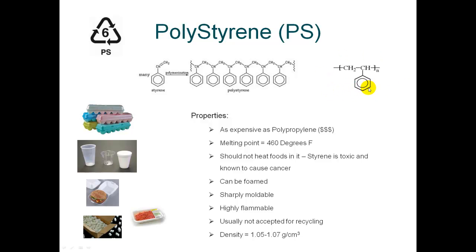This is the styrene monomer for polystyrene. The difference between this and polypropylene is that instead of having another carbon, what we've got is a ring of carbons. This ring represents six additional carbons that are folded on each other — each of these points is actually a carbon atom with a hydrogen atom on top of it. In most places where you'll see the formula, this simple six-sided ring is used as a shorthand instead of putting carbons all over.